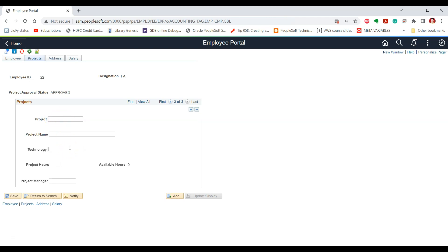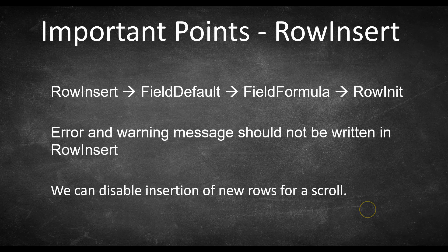Also, if we have written PeopleCode for the RowInit event, that PeopleCode will also be executed. The second important point is that error and warning messages should not be written in RowInsert, because RowInsert is followed by these subsequent PeopleCode events. Hence, it is not a good idea to write error or warning messages at the RowInsert PeopleCode event.